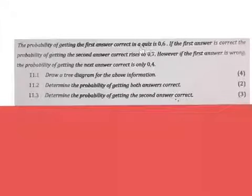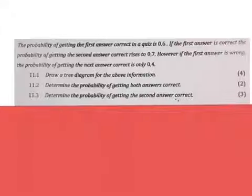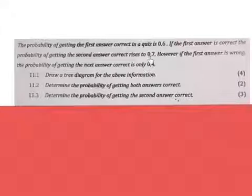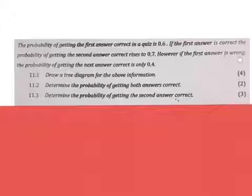Remember to read properly in probability. The question says: the probability of getting the first answer correct in a quiz is 0,6. If the first answer is correct, the probability of getting the second answer correct rises to 0,7. However, if the first answer is wrong, the probability of getting the next answer correct is 0,4.